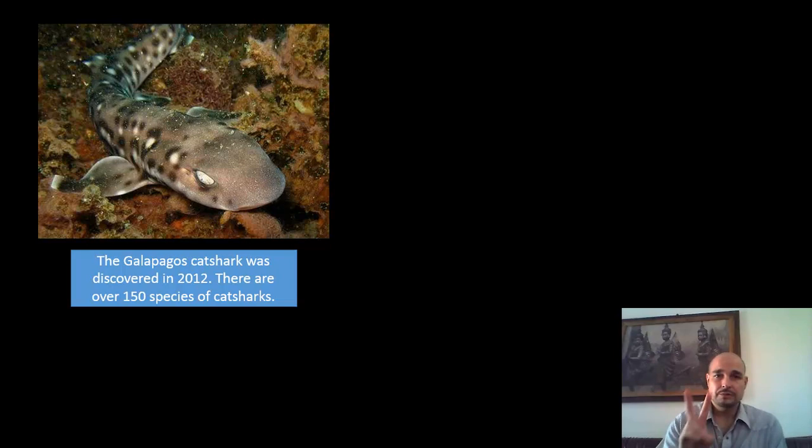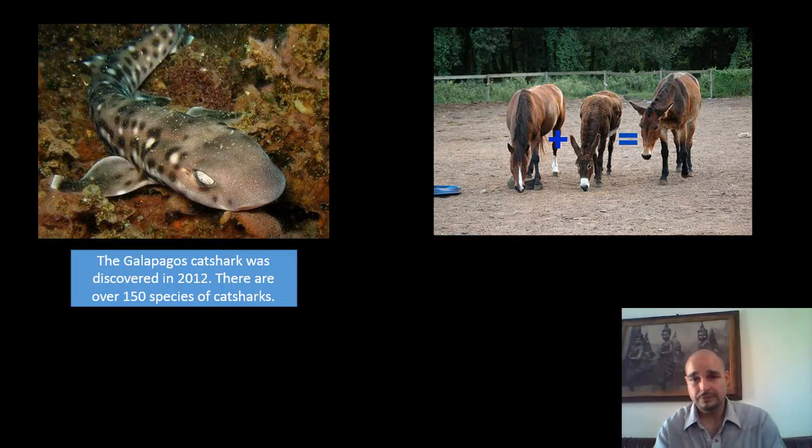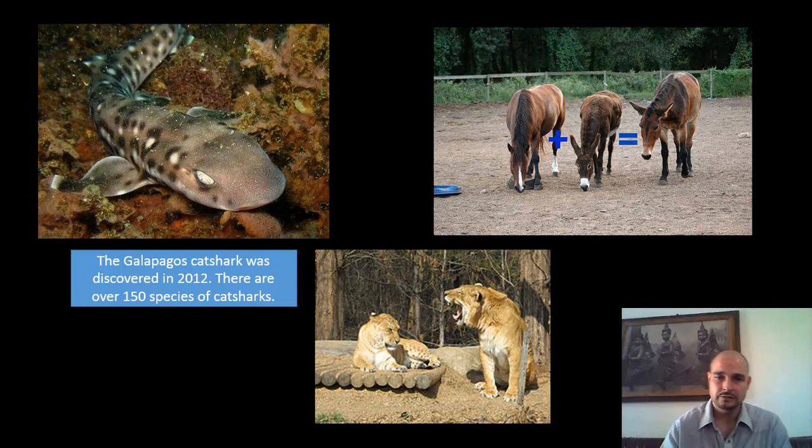Two species that are completely different but can reproduce because they are genetically similar enough are the horse and the donkey, and the horse and the donkey produce a mule. The mule is sterile — it cannot reproduce, so that's the end of the line. Another example: the lion and tiger, and they make ligers.